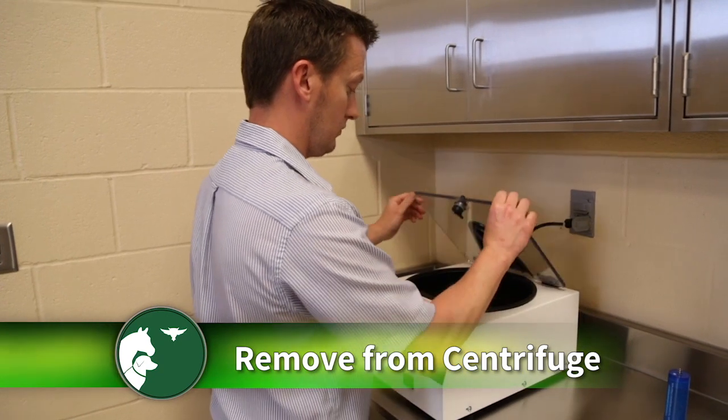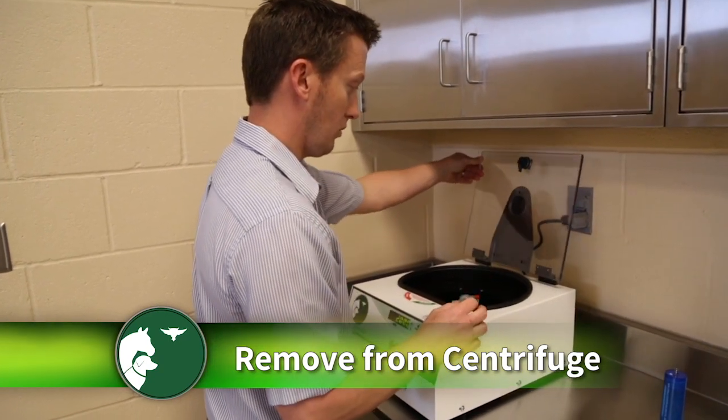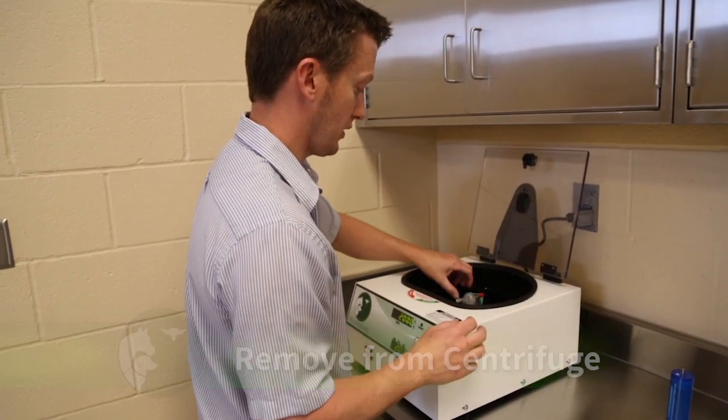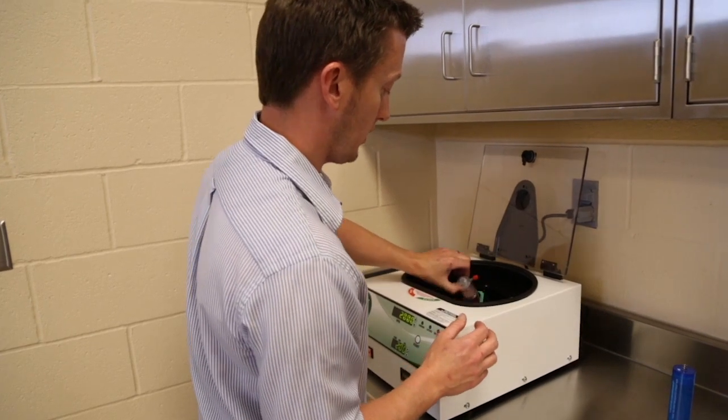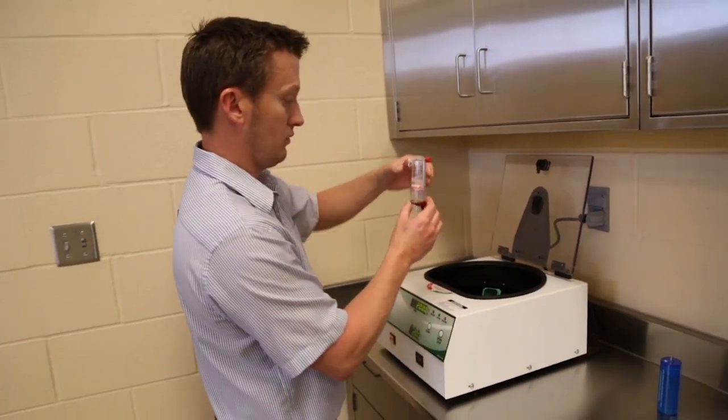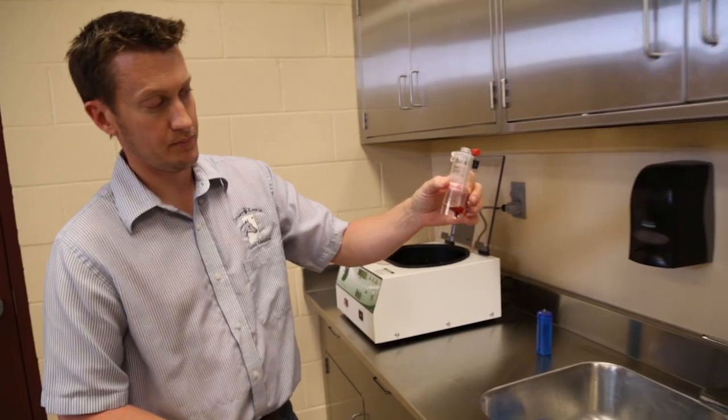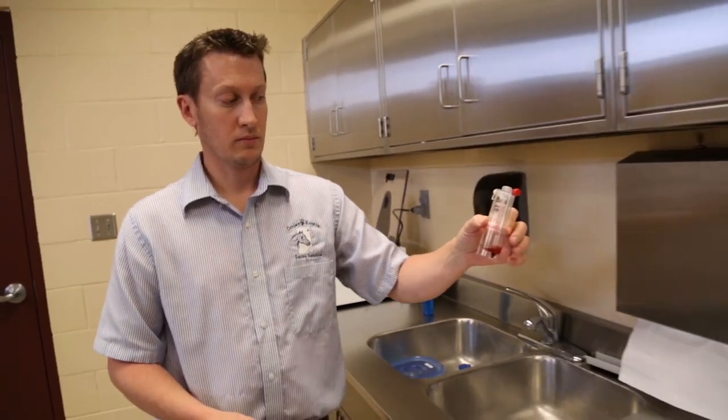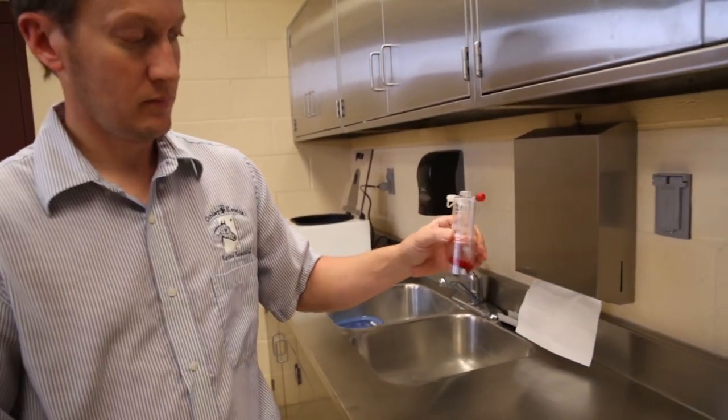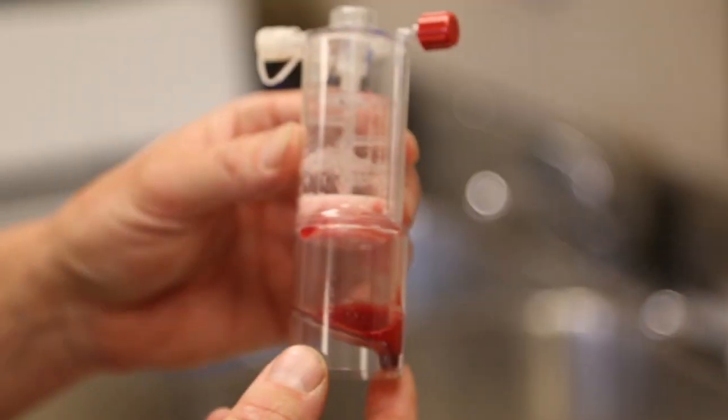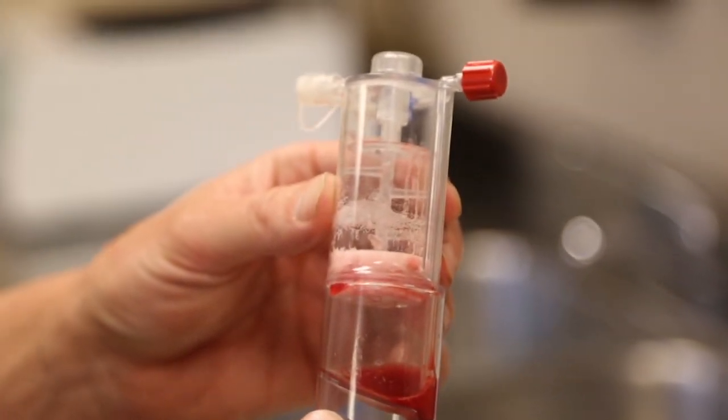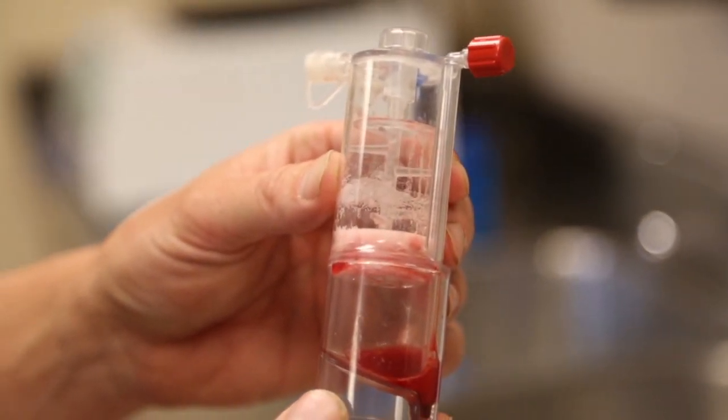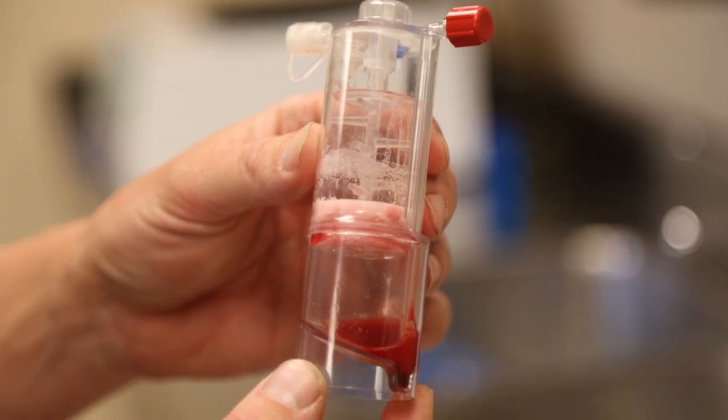At completion of the 2-minute spin, press the open button, open the top latch of the centrifuge, and remove the concentrator device. Prior to extraction from the concentrator device, gently shake before drawing into the final syringe. There will be a concentrated pellet of cells, so it is important to shake or agitate this concentration to allow for resuspension into the rest of the solution before drawing out for injection.